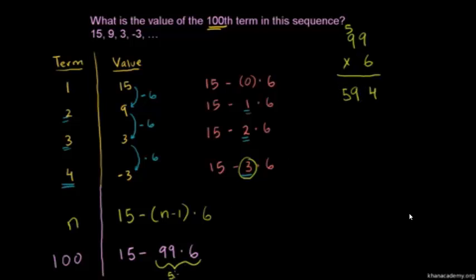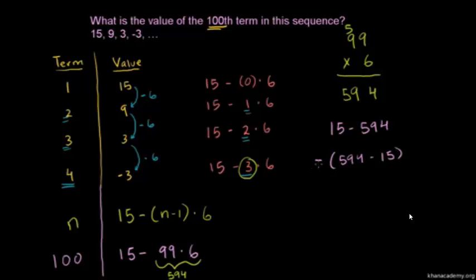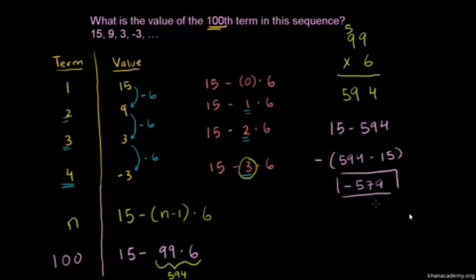So 99 times 6 is 594. Now we want to figure out what 15 minus 594 is. The way I process this is: 15 minus 594 is the same as the negative of 594 minus 15. If you distribute the negative sign: negative 1 times 594 is negative 594, and negative 1 times negative 15 is positive 15 — these two statements are equivalent. So 594 minus 15: 594 minus 14 is 580, minus one more is 579. So the hundredth term is negative 579.